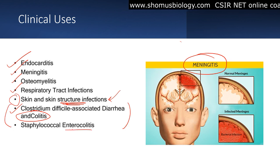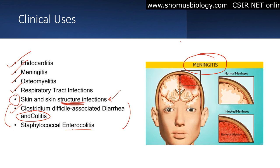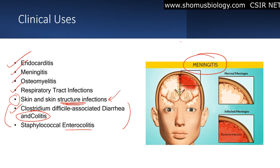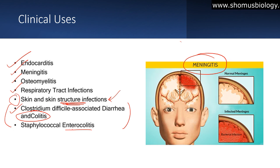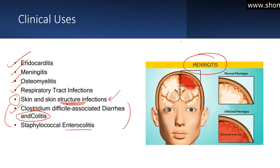In colitis, vancomycin is the drug of choice along with other antibiotics. These are life-threatening infections where vancomycin is used because not all antibiotics can penetrate the CSF, but vancomycin can be used in those cases. However, vancomycin is not used as the initial antibiotic of choice. We only rely on vancomycin if other antibiotic treatments have not responded to the infection.